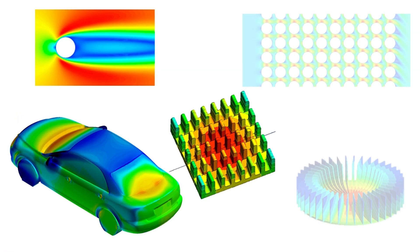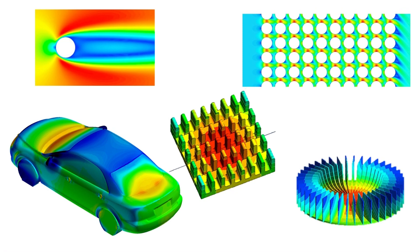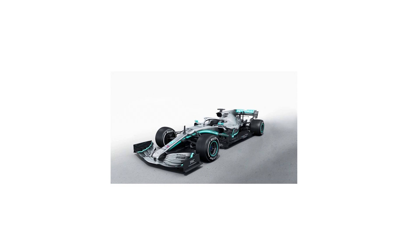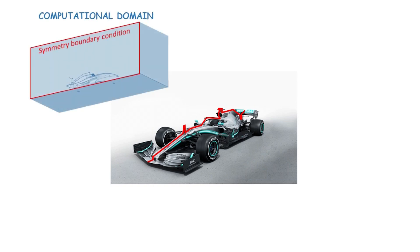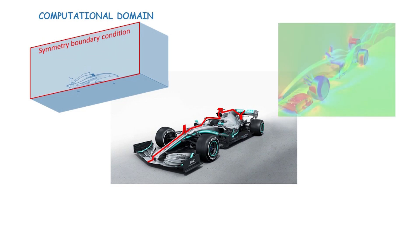If the flow configurations are symmetrical or involve repetition, we can substantially reduce the size of the computational domain by applying a symmetric boundary condition or periodic boundary condition. For example, suppose the flow around an F1 car is symmetrical about its centerline. We can then model only one half of the flow by assigning the symmetric boundary condition, reducing the size of the computational domain by half and therefore conserving computer resources. The obtained result is assumed to be identical on both sides of the car.